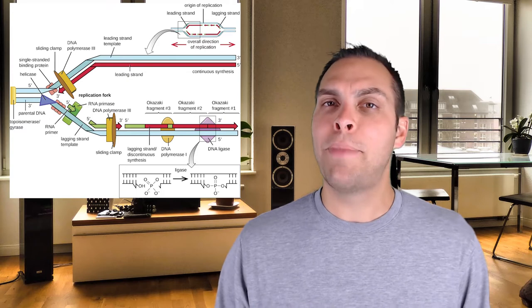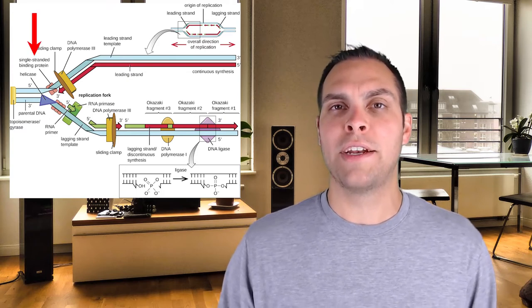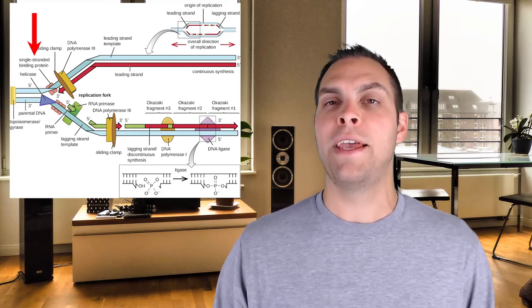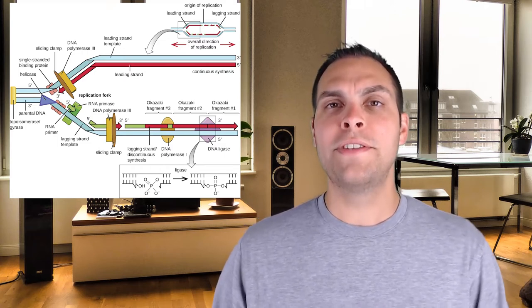So how does the cell keep those two strands of DNA apart long enough for DNA polymerase to do its job? That's the job of single-stranded binding proteins, typically abbreviated as SSBPs. Single-stranded binding proteins come in and hold the two strands apart, preventing the hydrogen bonds from reforming between the two template strands so they stay separate for as long as needed during the DNA replication process.